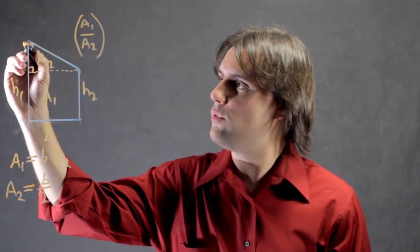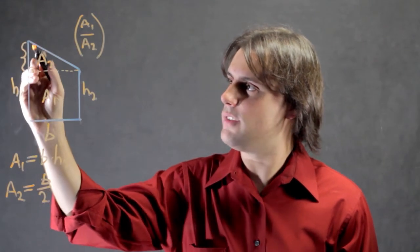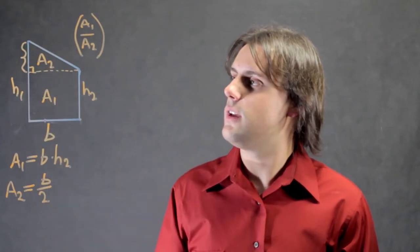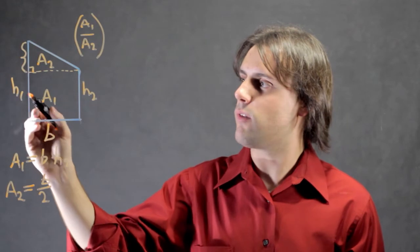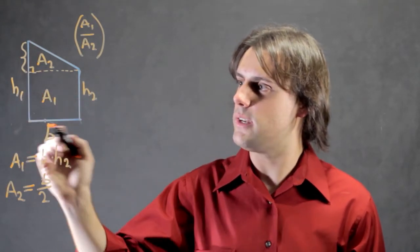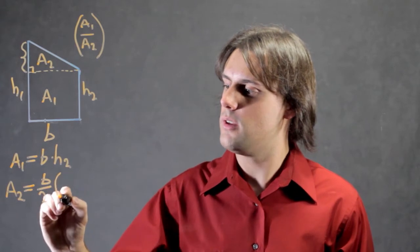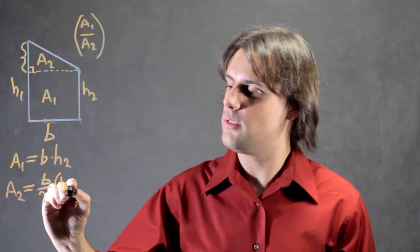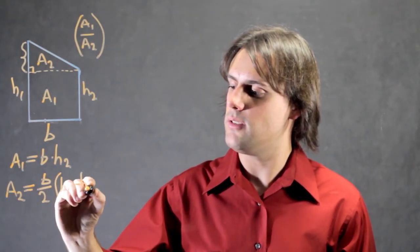But then we want to calculate what this height of this triangle is. And we see that we can write it in terms of these two heights. It's merely the difference between H1 and H2. So I have B over 2 times H1 minus H2.